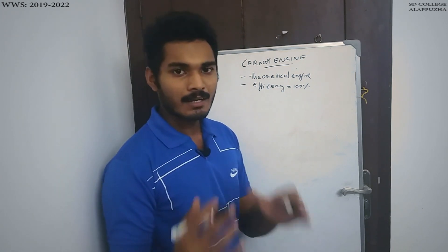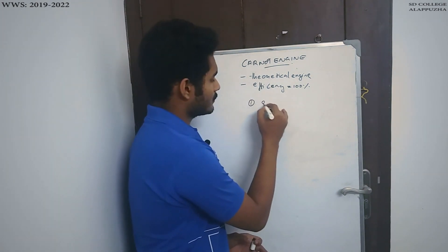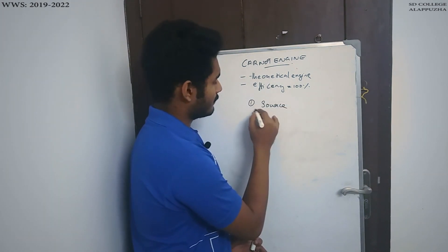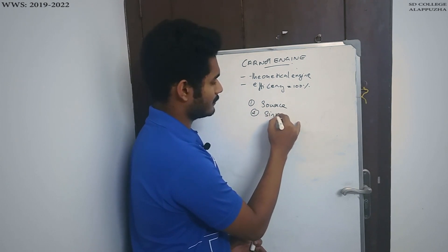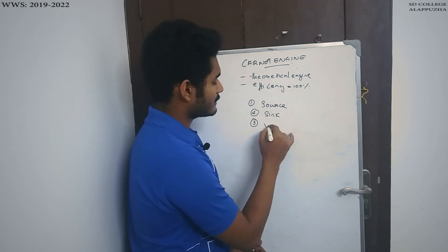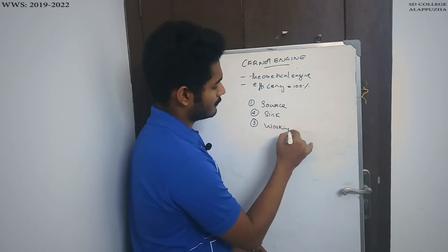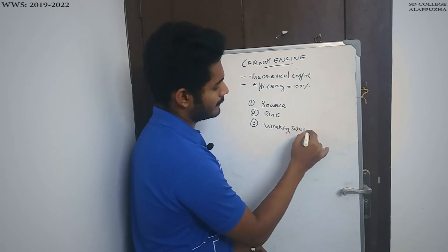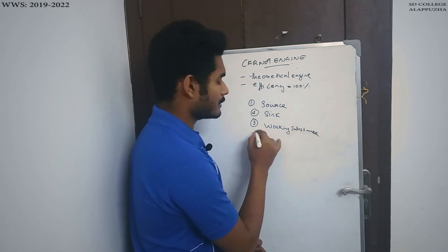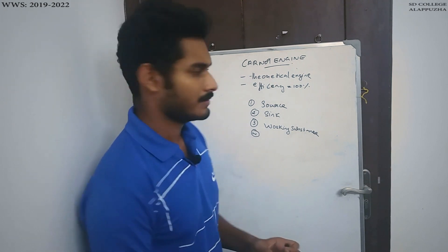The Carnot engine has four parts. The first part is the source. The second part is the sink. The third part is the working substance. The fourth part is the insulating stand.